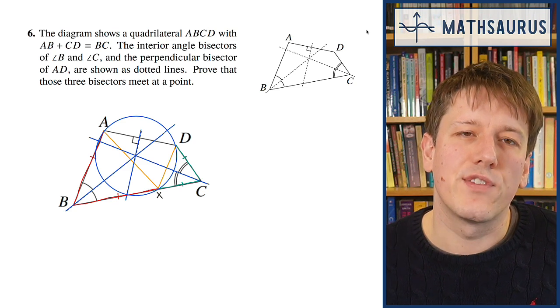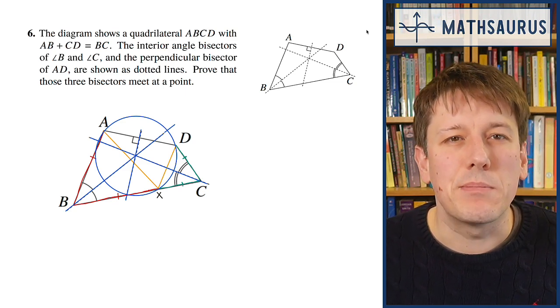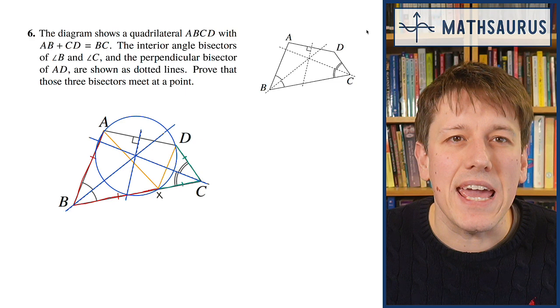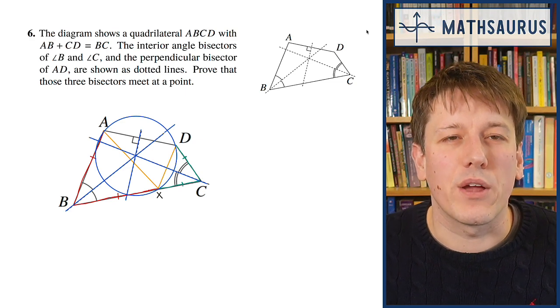That's also true for the blue line that goes through angle B. That's a perpendicular bisector of the chord AX, and so that's also going to be going through the center of the circle.